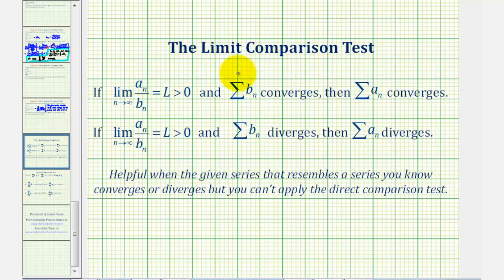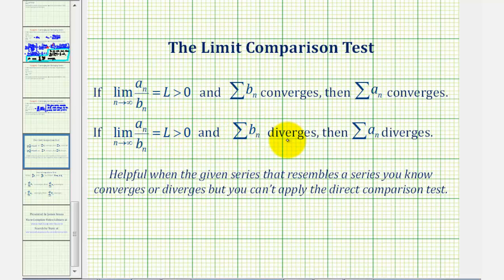Let's start with a review. The limit comparison test states that if the limit as n approaches infinity of a_sub_n divided by b_sub_n equals L, which is greater than zero, and the sum of b_sub_n converges, then the sum of a_sub_n also converges. But since we're comparing to a diverging series, we're more concerned about the second statement: if the limit as n approaches infinity of a_sub_n divided by b_sub_n equals L greater than zero, and the sum of b_sub_n diverges, then the sum of a_sub_n diverges. So the sum of b_sub_n is the harmonic series, where b_sub_n is one divided by n, and the sum of a_sub_n will be the given series.